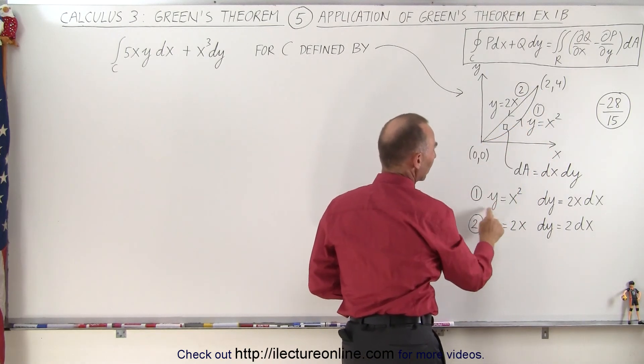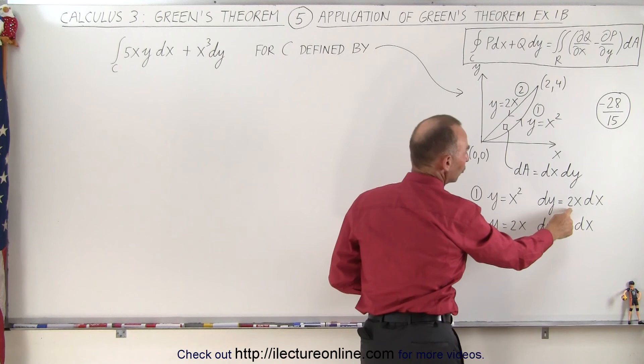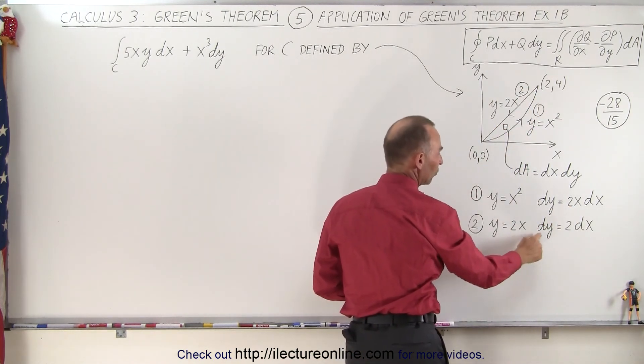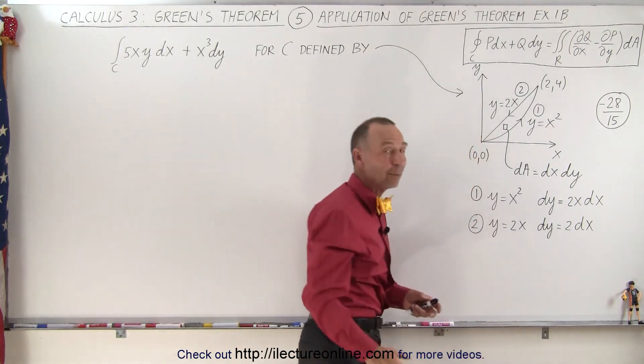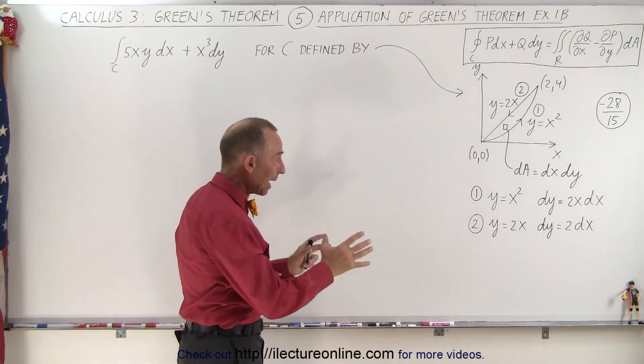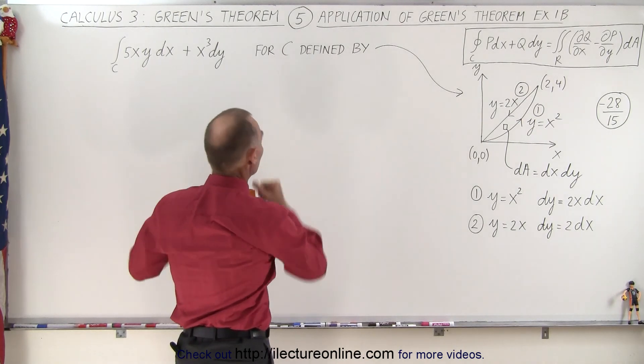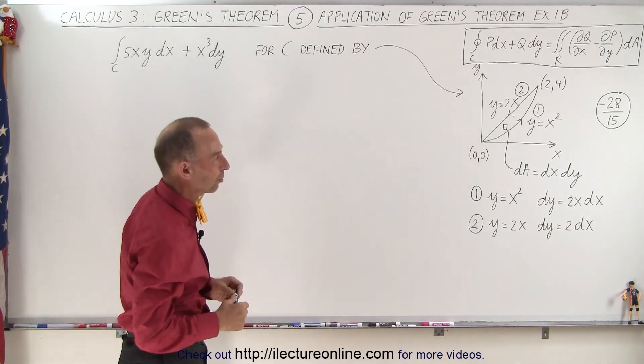Notice that on curve 1, y equals x squared, so dy equals 2x dx. And on the second curve, y equals 2x, so dy equals 2dx. We can actually get by with just eliminating the y variable and only have everything in terms of x, so we don't have to really use the parametric equations.